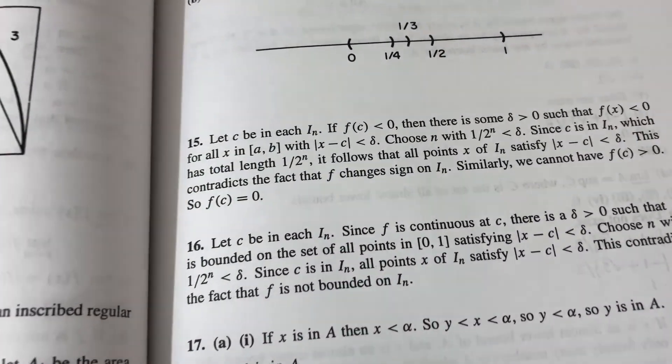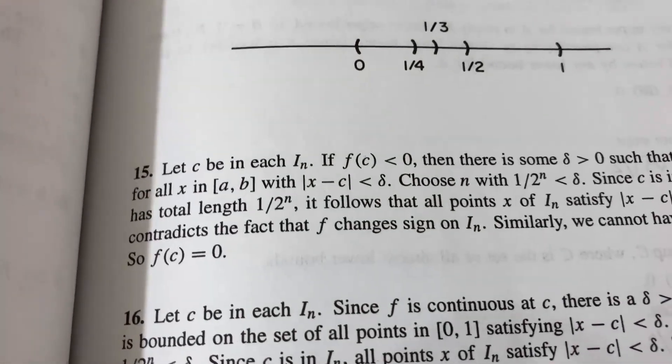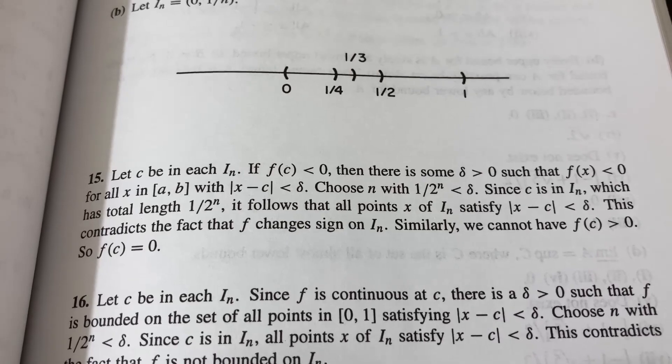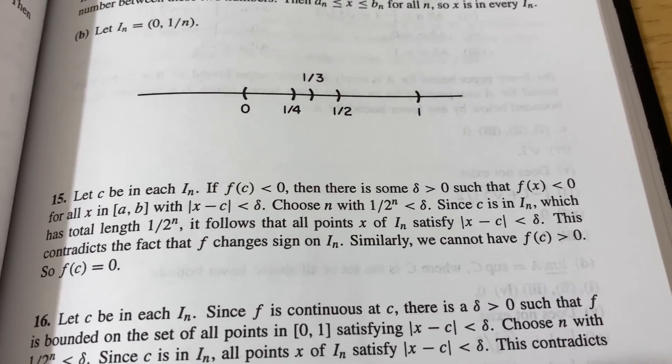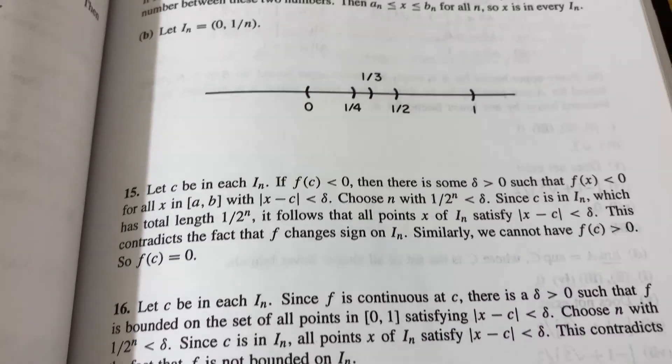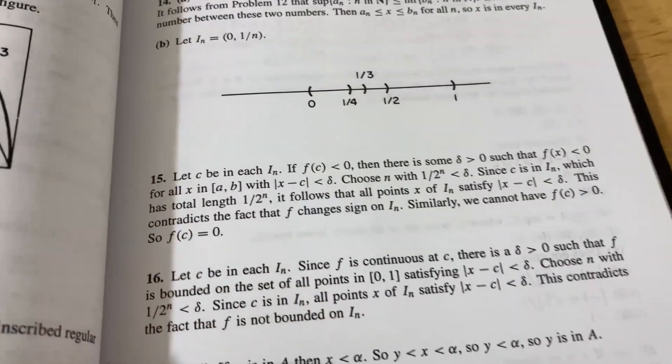So you can see here the level of detail in some of the solutions. Let's C be in each I sub n. If F of C is less than zero, then there is some Delta greater than zero, such that F of X is less than zero for all X and the closer to a little AB with that condition there. So yeah, it looks like it's basically going through the proof.